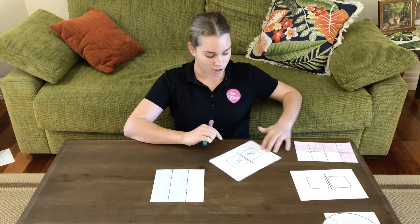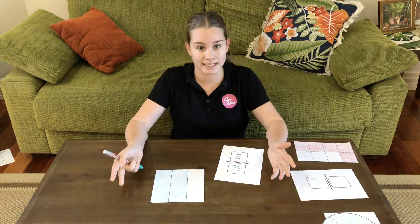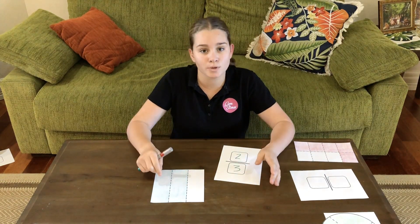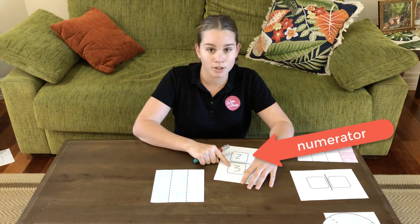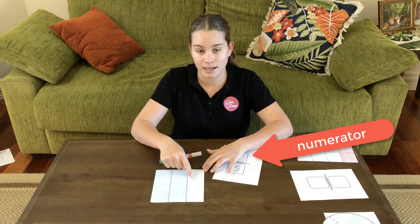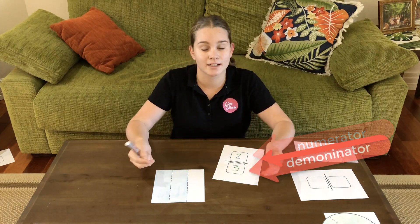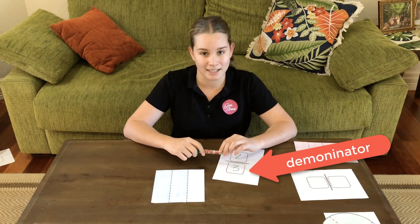The top number tells us how many parts we've shaded, which is called the numerator. And the bottom number tells us how many parts there are altogether, which is called the denominator.